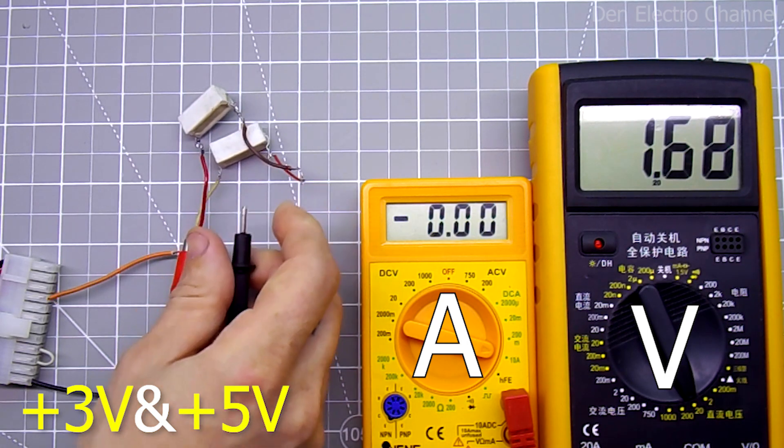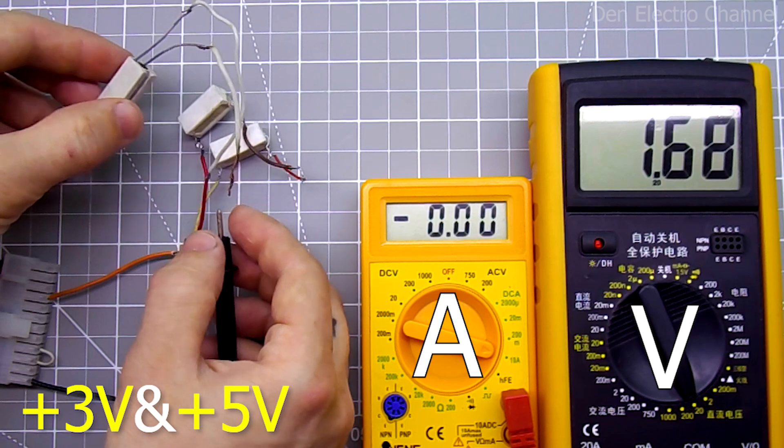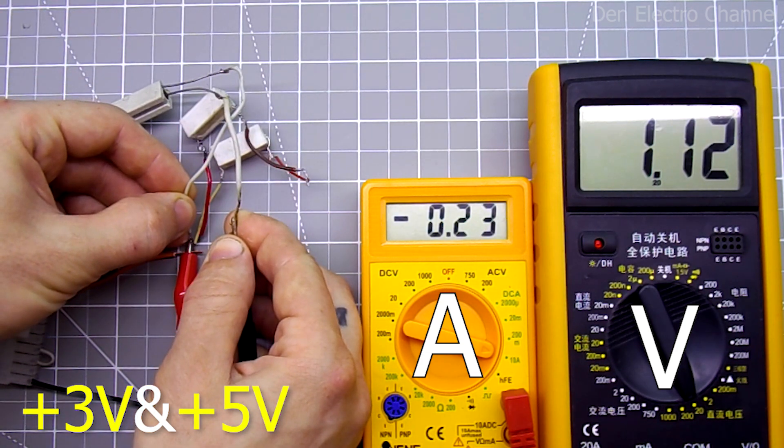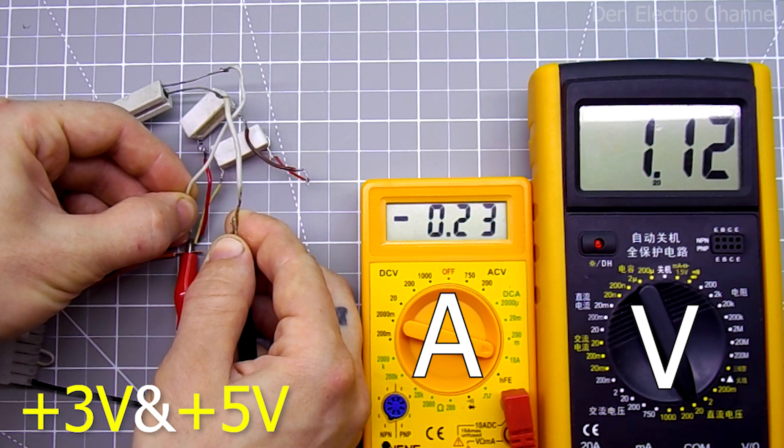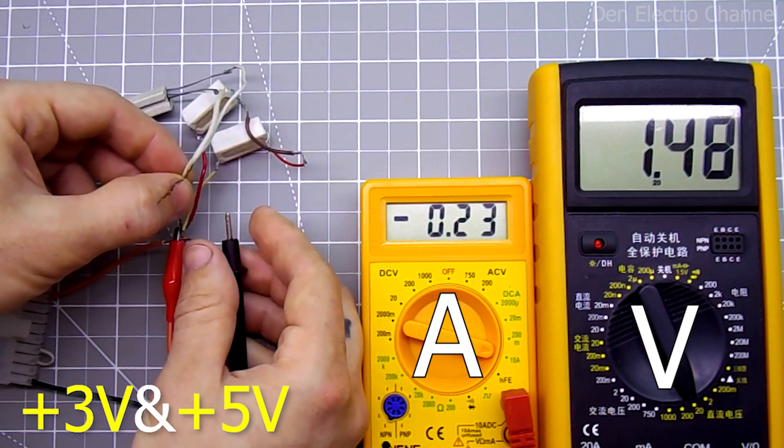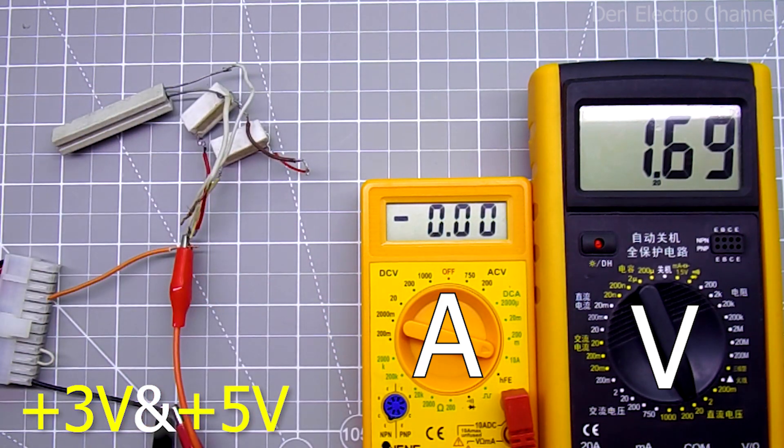Now I'll take another resistor with a lower resistance. The current is 230 milliamps, but the voltage has dropped to 1.1 volts. As you can see, the voltage on this line is very unstable and changes greatly under the influence of the load. But it can easily handle something low power in the form of LEDs, some thermometers, watches that are powered by 1.5 volts. You can even charge nickel cadmium batteries.